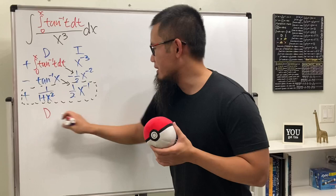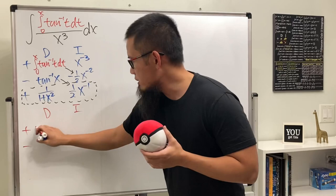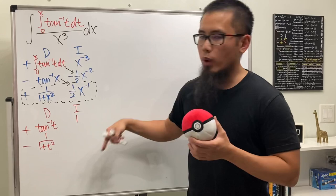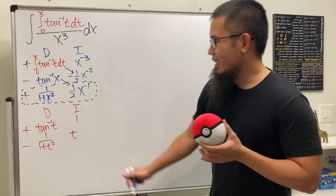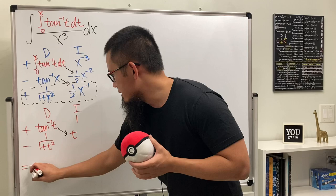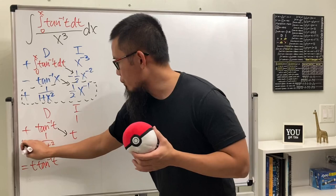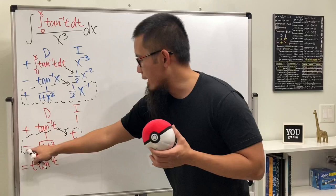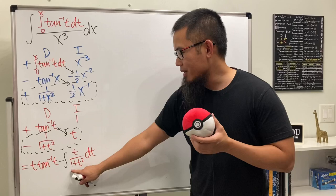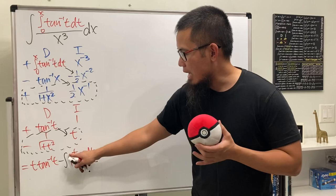Let's handle this red integral using integration by parts — the DI method again. We're now in the t-world. We'll be differentiating inverse tangent of t, which gives one over one plus t squared, and integrating one in the t-world gives t. This times that gives us the first part: t times inverse tangent of t. Then we multiply the remaining entries together and put it in a sub-integral, giving us minus the integral of t over one plus t squared dt.